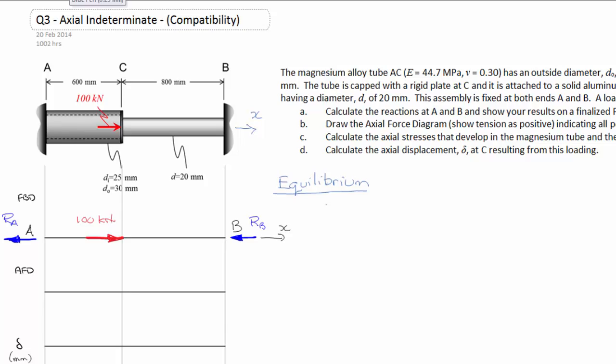The first thing we're going to do is use the one equation of equilibrium that we have. Sum of the forces in the x direction equals zero. Working left to right off my free body diagram, I have negative RA, then the applied load 100 kilonewtons at C, and negative reaction at B.